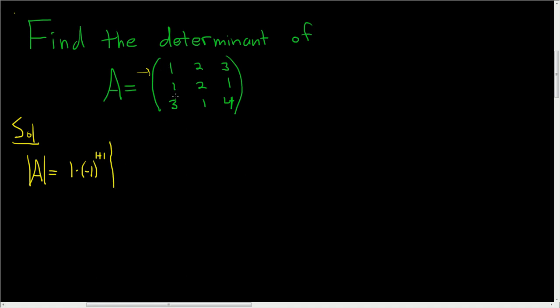We're going to cross out the corresponding row and column. So we're crossing out the 1, 2 and the 3 and the 1, 1 and the 3. So we're left with 2, 1, 1, 4. So 2, 1, 1, 4. Okay, that's the first step.